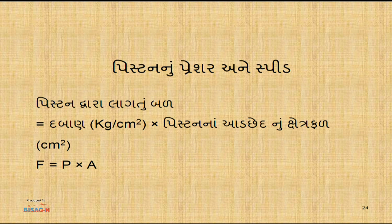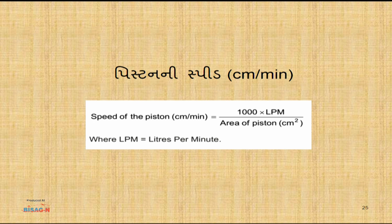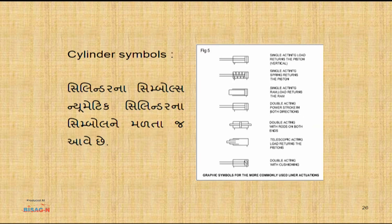ત્યારબાદ જોઈશું પિસ્ટનનું પ્રેશર અને સ્પીડ. પિસ્ટન દ્વારા લાગતું બળ = દબાણ × ક્ષેત્રફળ. દબાણનો એકમ kg/cm² અને એરિયા (ક્ષેત્રફળ) - cross-section area of piston - નો એકમ cm² છે. ત્યારથી પિસ્ટનની સ્પીડ (ઝડપ)નો એકમ cm³/min આવે છે. ત્યારબાદ cylinder symbols - સિલિન્ડરના સિમ્બોલ pneumatic cylinder ના સિમ્બોલ જેવા મળતા જ હોય છે.